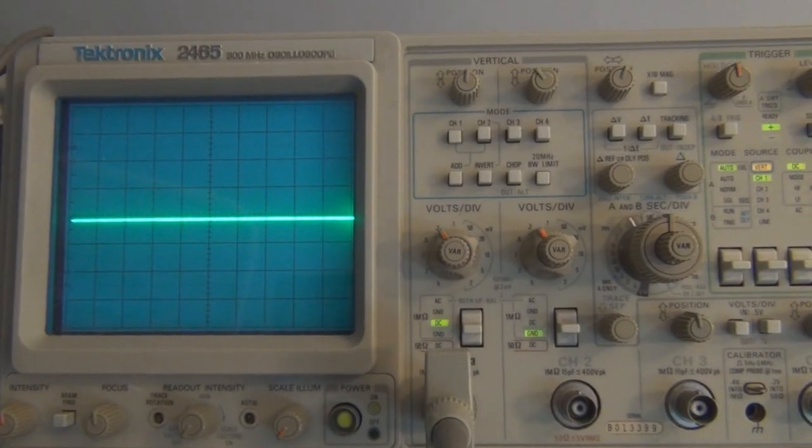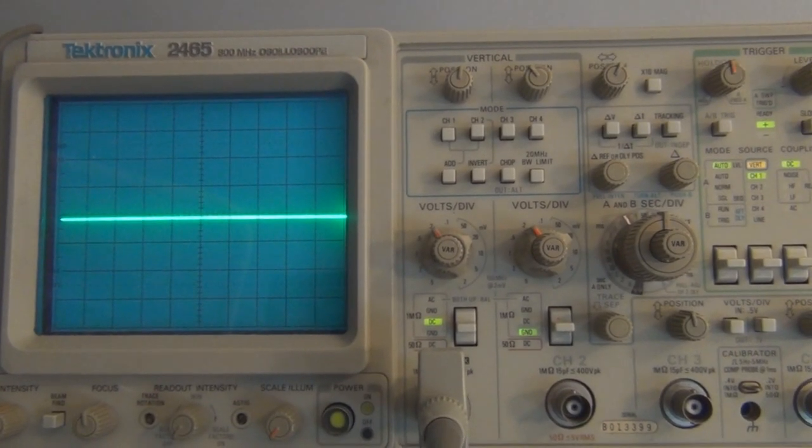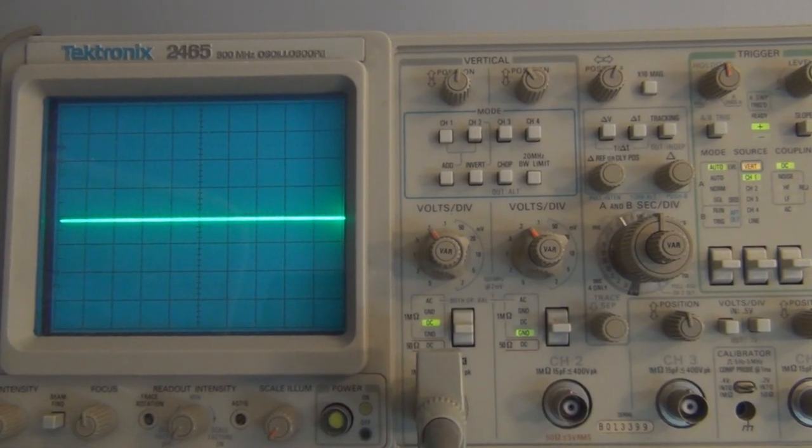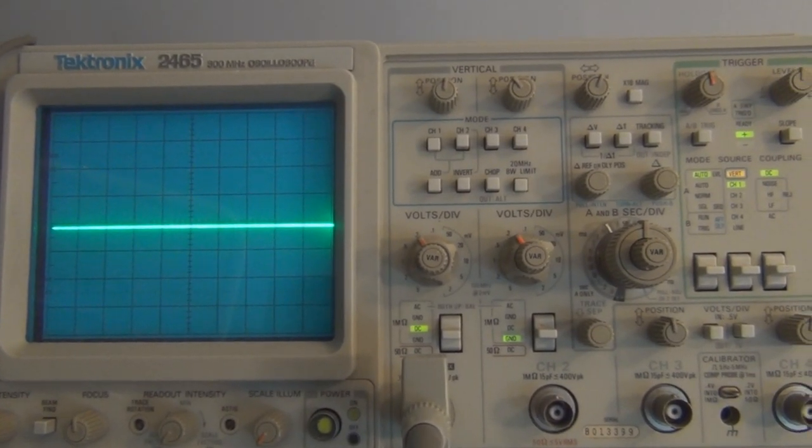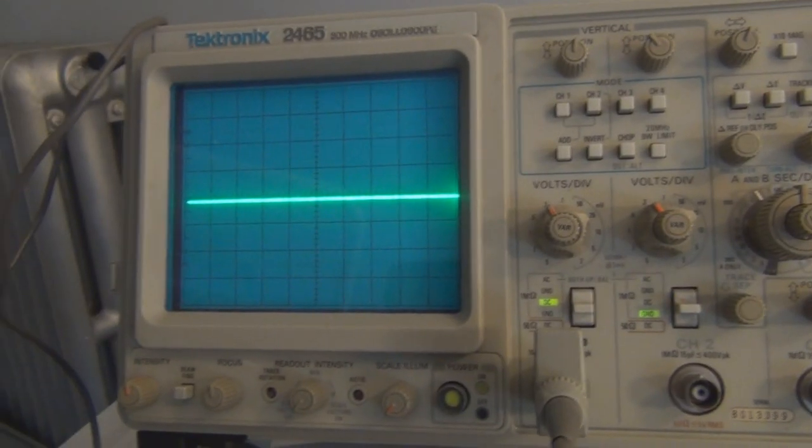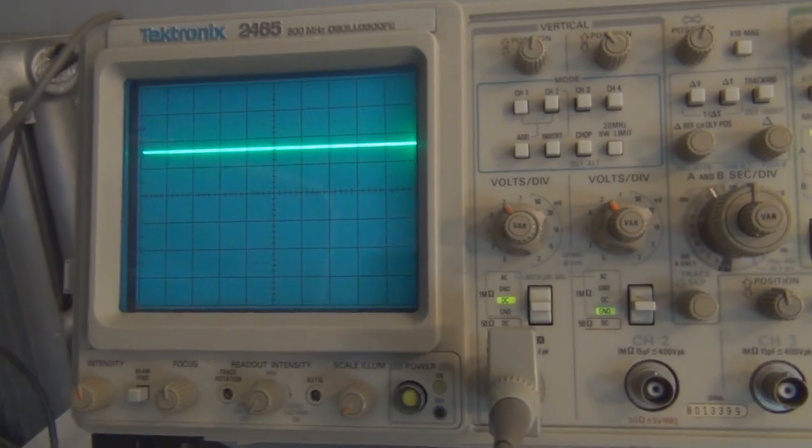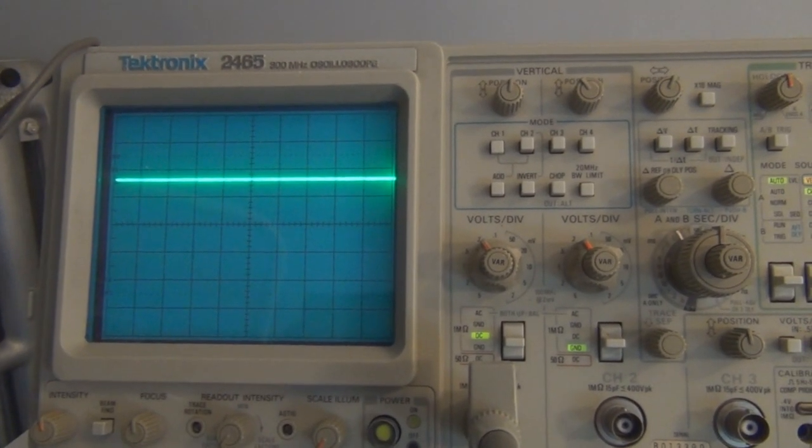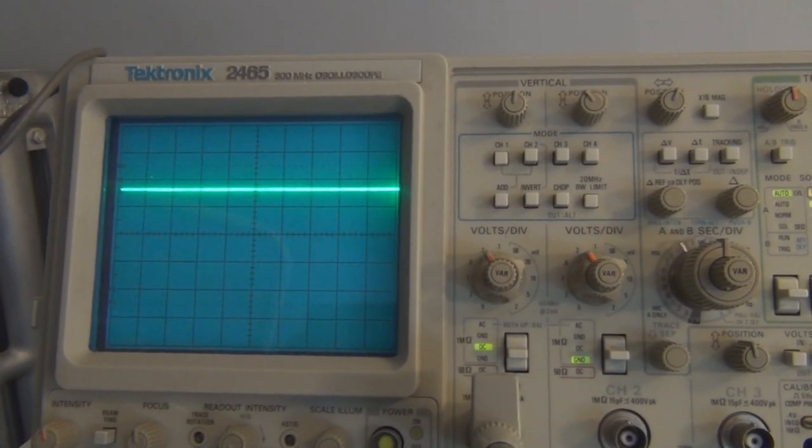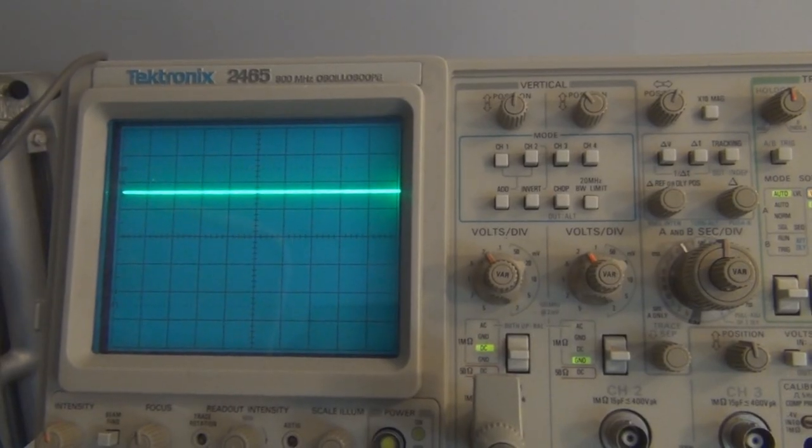I have the output of the one shot connected to the scope so let's take a look at that pulse. So you can see here the output of the one shot or the stable output, the normal output is Q equal to zero. And when I trigger it, it goes to five volts and it will remain there for about 12 seconds.